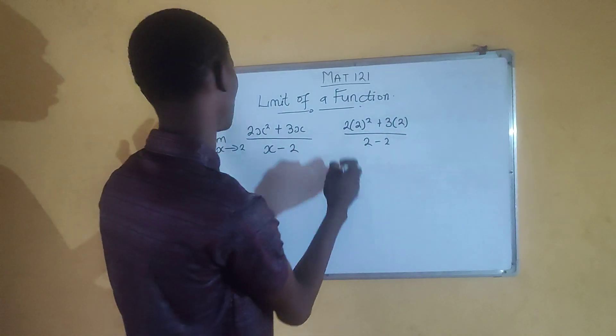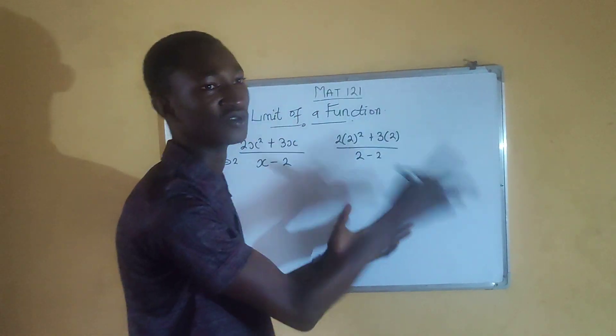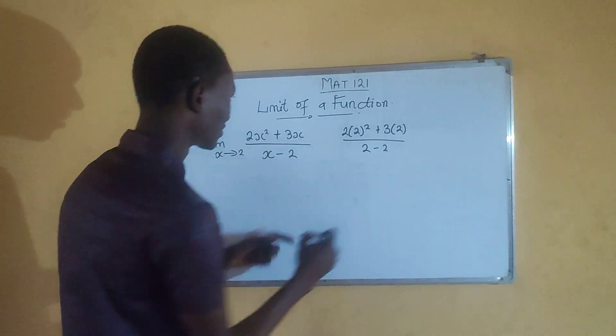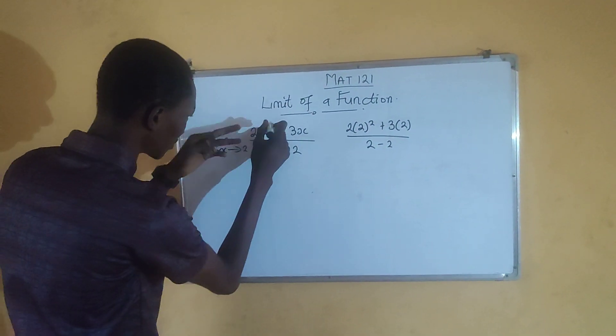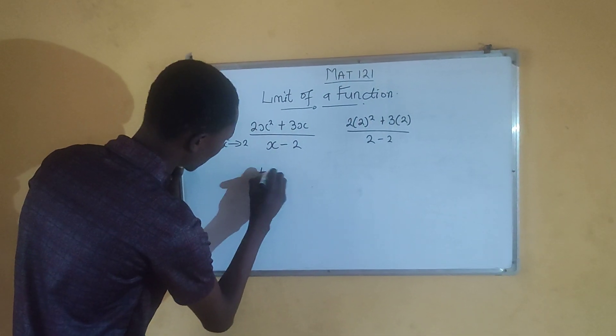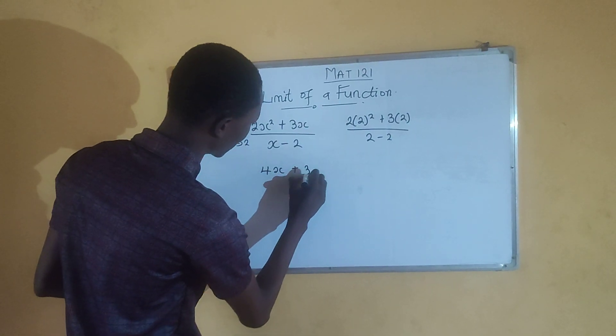So what you do is what is called L'Hôpital's rule, and it is done by differentiating both the numerator and the denominator at the same time. So you differentiate one by one. When you differentiate 2x squared, you get 4x. When you differentiate 3x, you get 3.